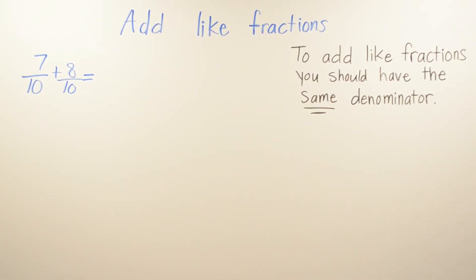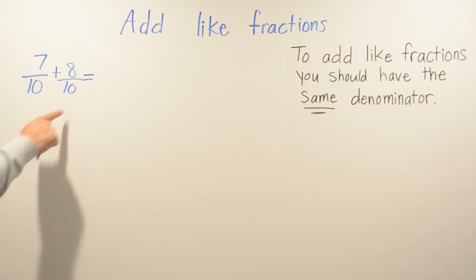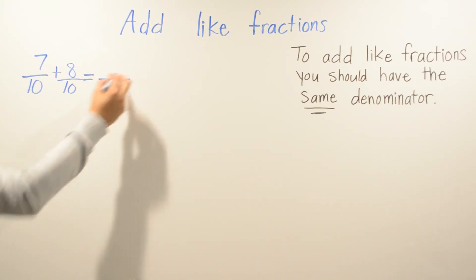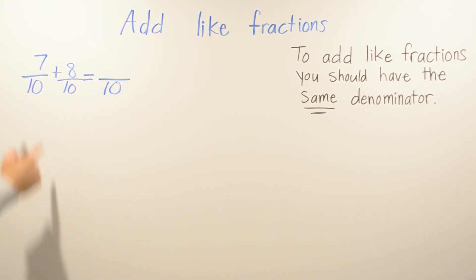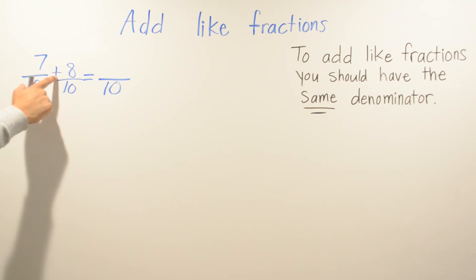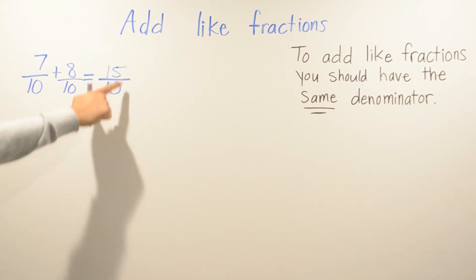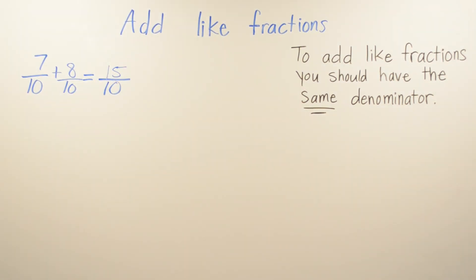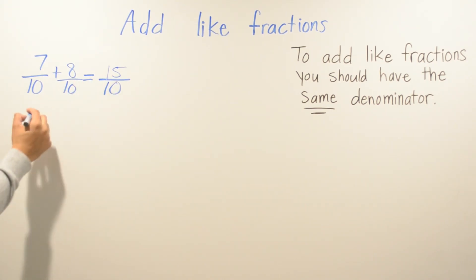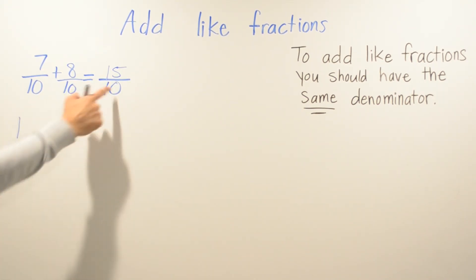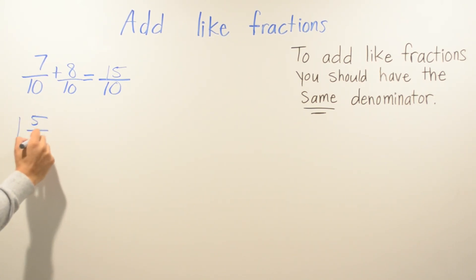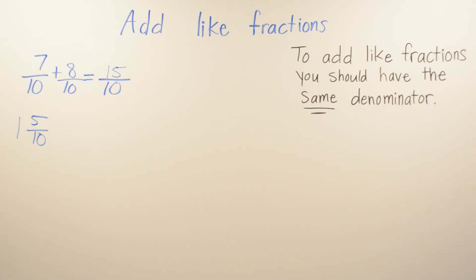In this final example you can pause the video and try to solve it on your own, then continue watching. We have 10 in the denominator — it's not going to change, it stays the same. Then we add the numerators: 8 plus 7 is 15. Since 10 is smaller than 15, we write it as a mixed number: 10 goes into 15 one time with 5 left over, giving us 1 and 5/10.